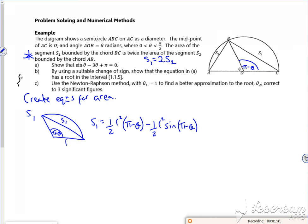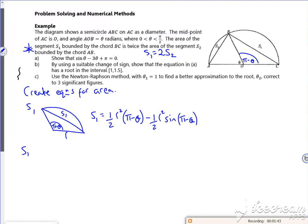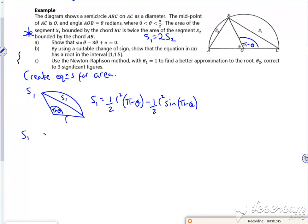And then for S2, let's have a look at S2. So S2 is going to be that way, isn't it? So S2 will be a half R squared theta minus a half R squared sine theta, there.